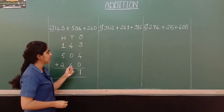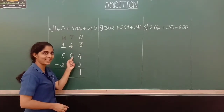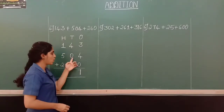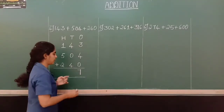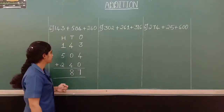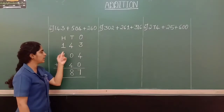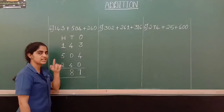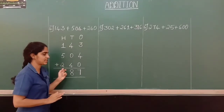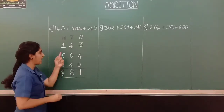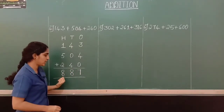Let us move to 10's place where we have 4, 0, and 4. 4 plus 0 is 4, then 4 plus 4 is 8. Let us move to 100's place where we have 1, 5, and 2. 1 plus 5 is 6, then 6 plus 2 is 8. So the sum of these three numbers is 887.